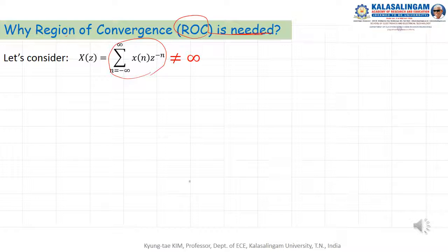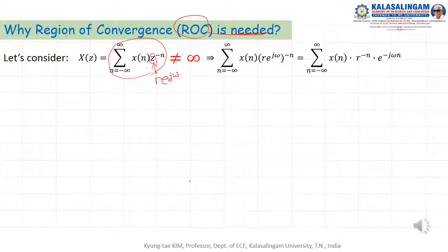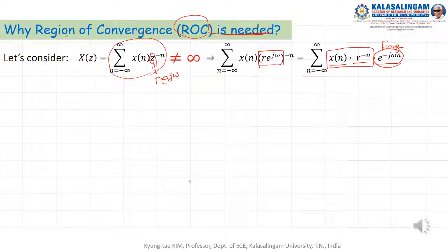Why is the Region of Convergence needed? Z equals R times exponential J omega, so we can substitute this into the formula. The resulting term has a frequency component and an amplitude component. Pay attention to the amplitude part — this component does not affect frequency and is not dependent on omega.